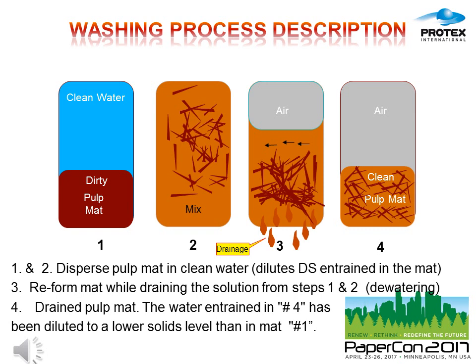In this slide you can see a description of the washing process. You start with your dirty pulp mat that you want to clean. To do that you add clean water. The result is a mix of fibers and chemicals diluted in the water. Then the most important step of the washing process starts: the drainage. During the drainage, the drainage liquid takes away most of the chemicals you don't want in the process. If all the steps have been organized in a good way, the result will be a much cleaner pulp compared to the beginning of the process.